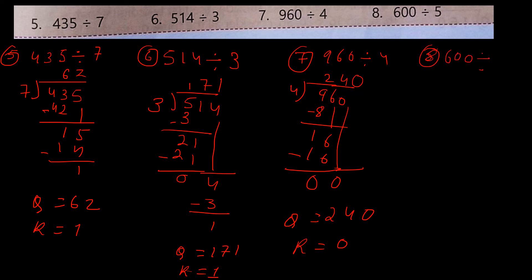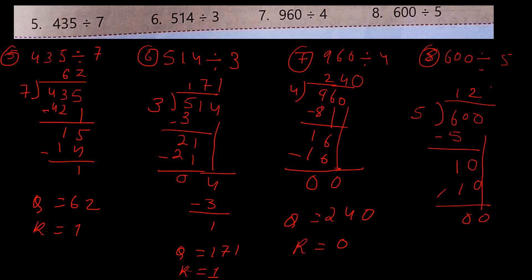Number 8: 600 divided by 5. 5×1=5... this gives 10 here, then the 0s come down. So Q is equal to 120, R is equal to 0. Children, basically we will solve this — do practice. Thank you everyone.